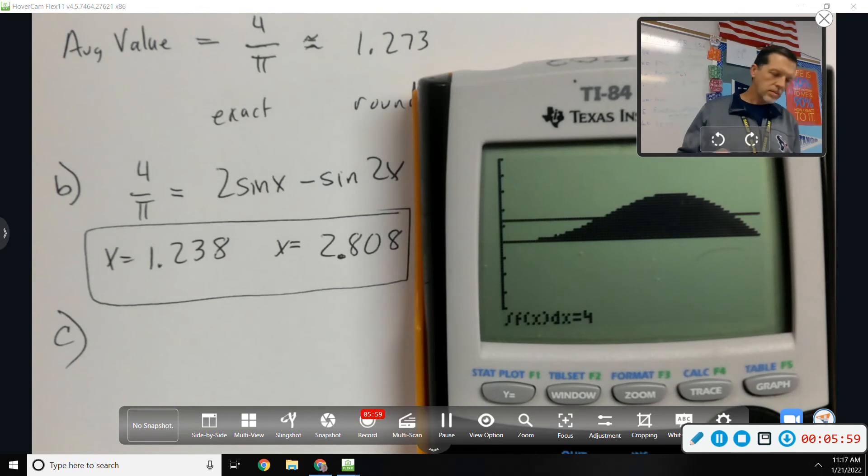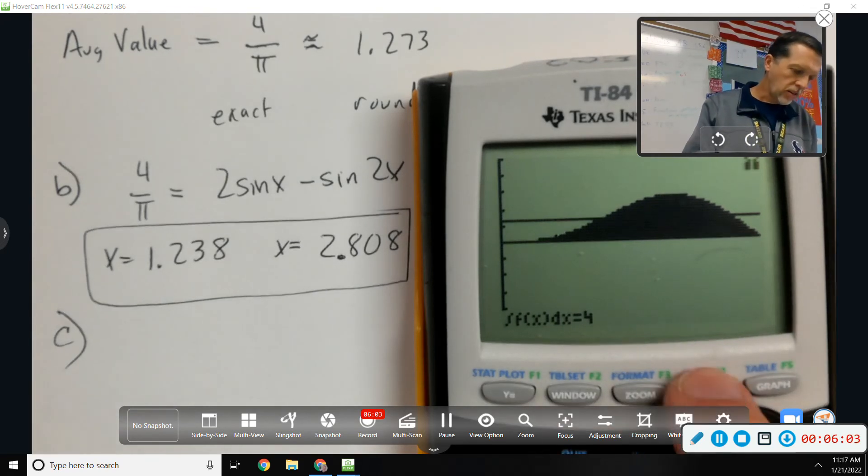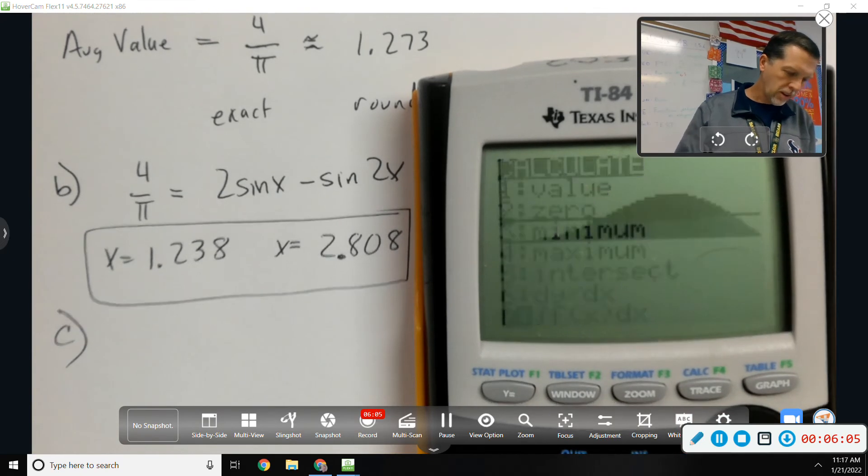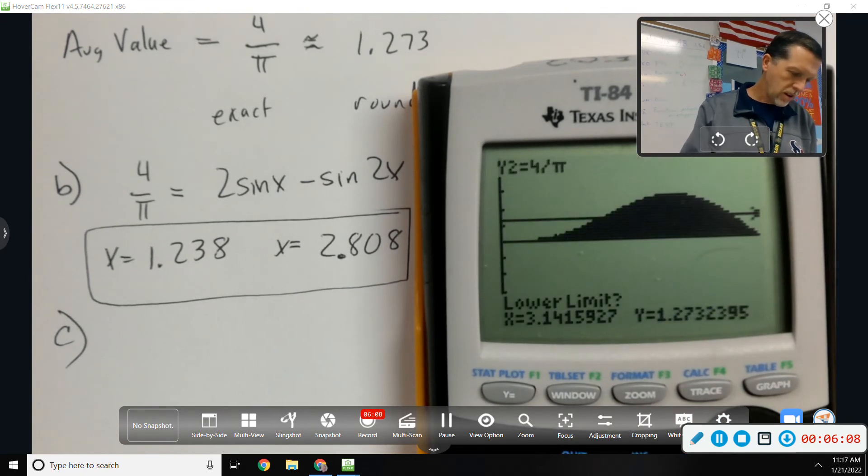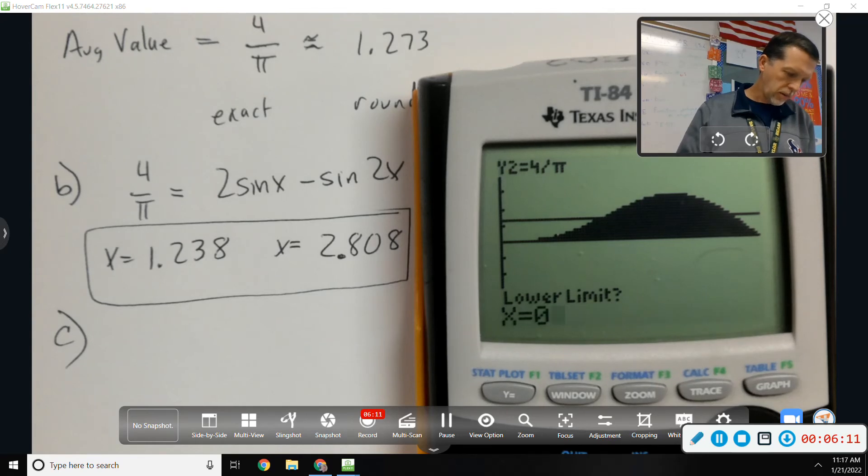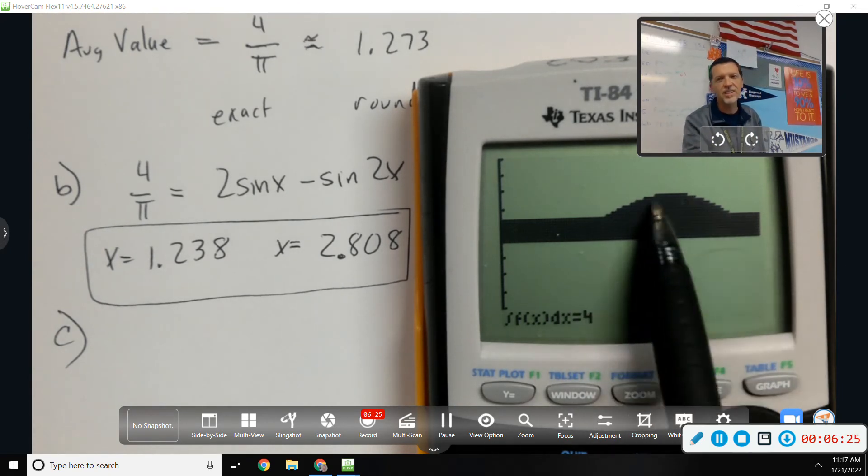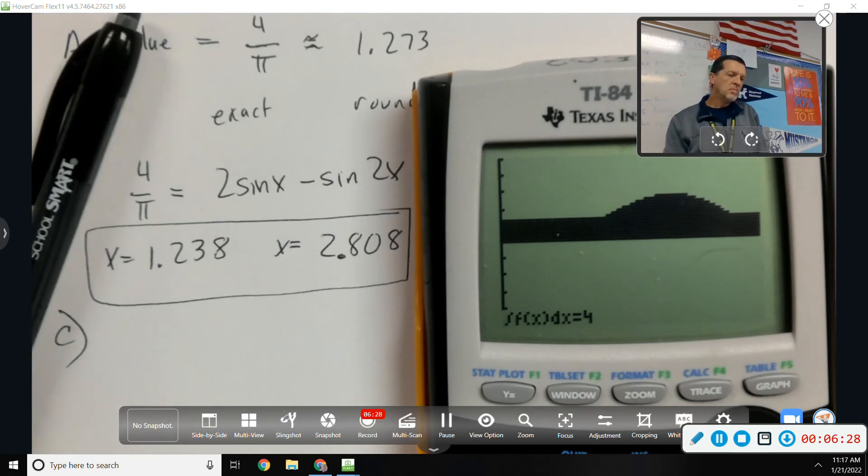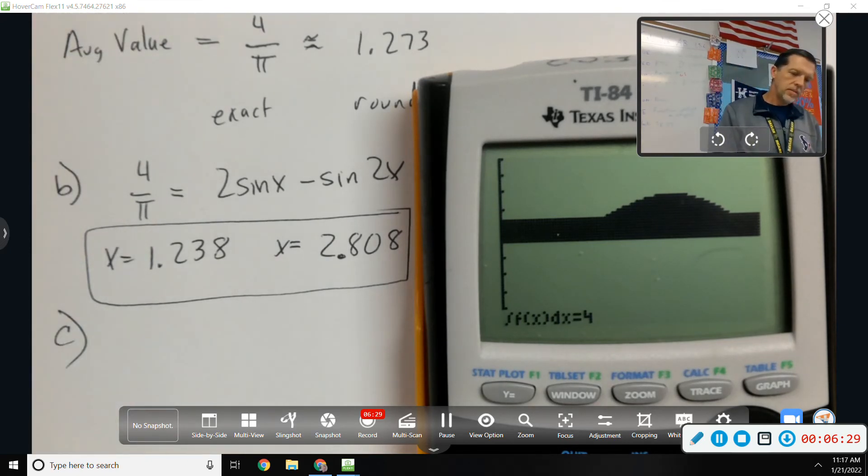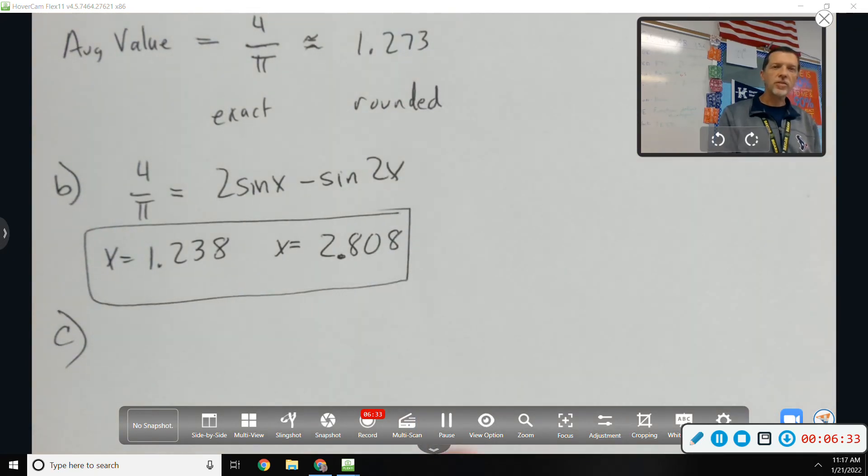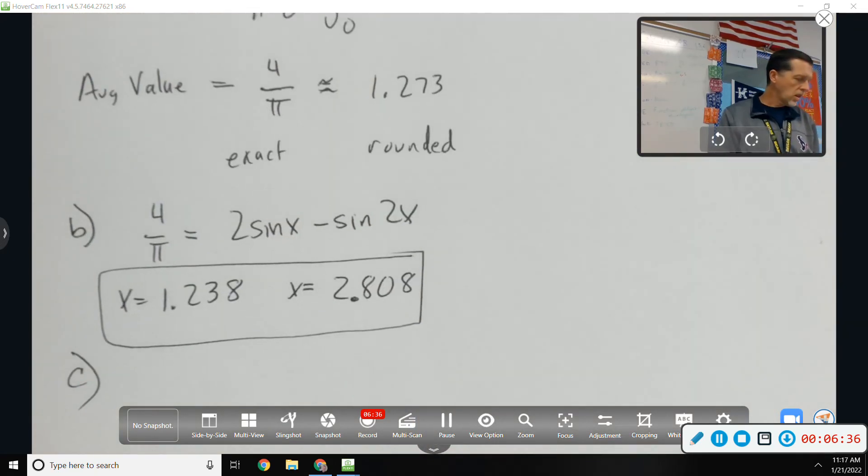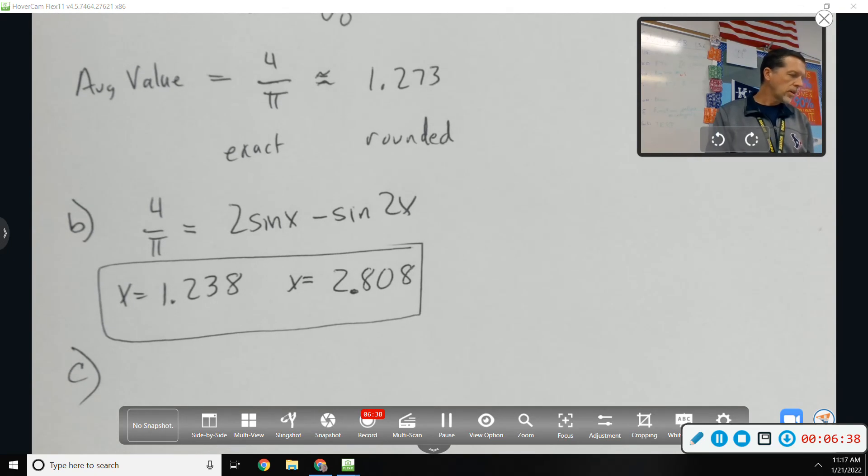I suppose we could even integrate the other one. Y2 from zero to pi. Shades that in. And that's also equal to four. Although, that's maybe a little misleading because now four represents only the rectangular shading, not the top shading. Fun with the calculator to sort of verify our answers.